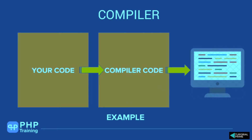In compiler-based languages, you write your code, then you compile it, and once you compile the code you get machine-level code which you then execute. So there are two steps: whenever you write code, you have to compile it and then run the compiled code. In languages like C, C++, and Java, you write the code but you cannot execute it directly — you have to compile it first, and then execute the resulting machine-level code.